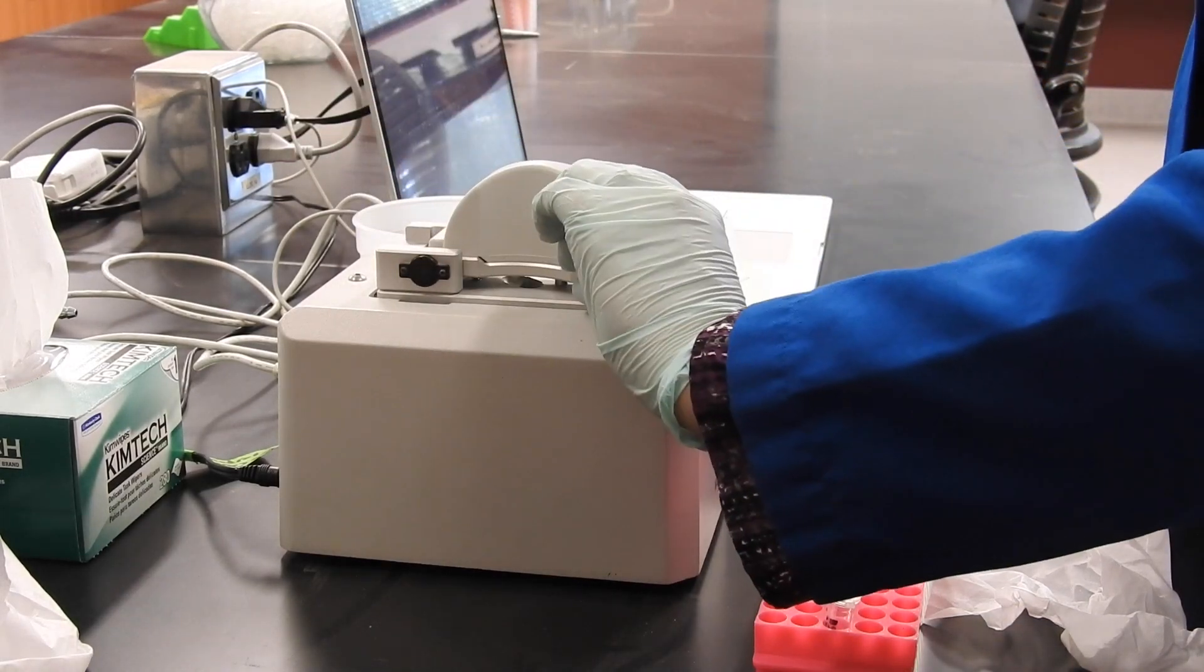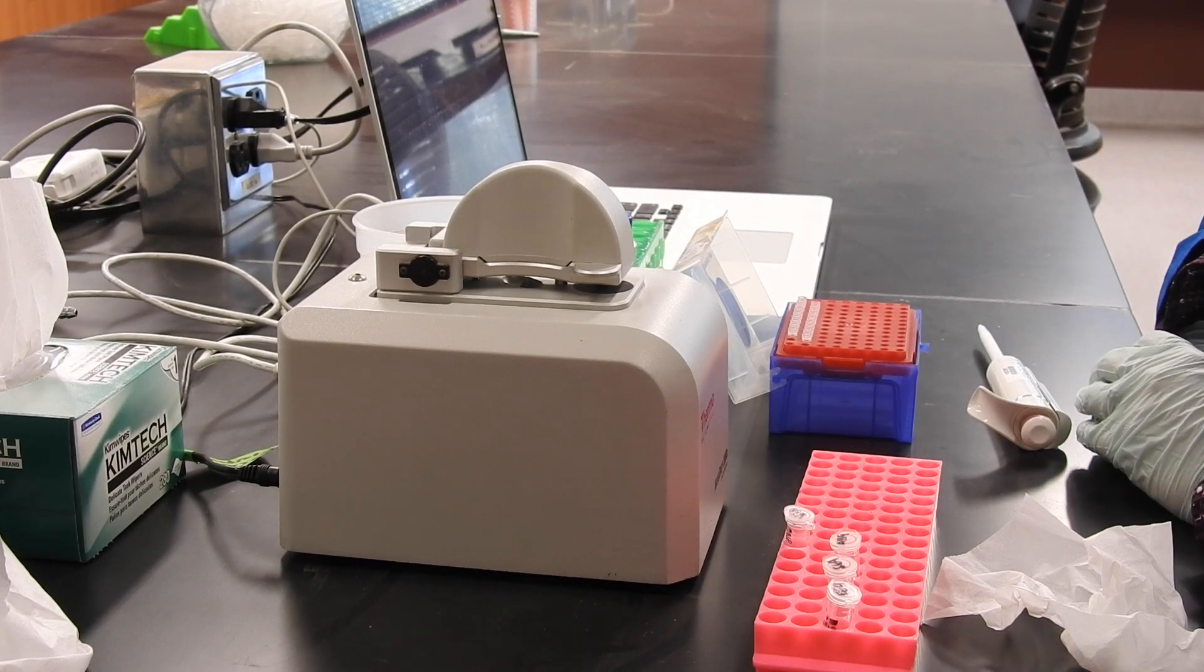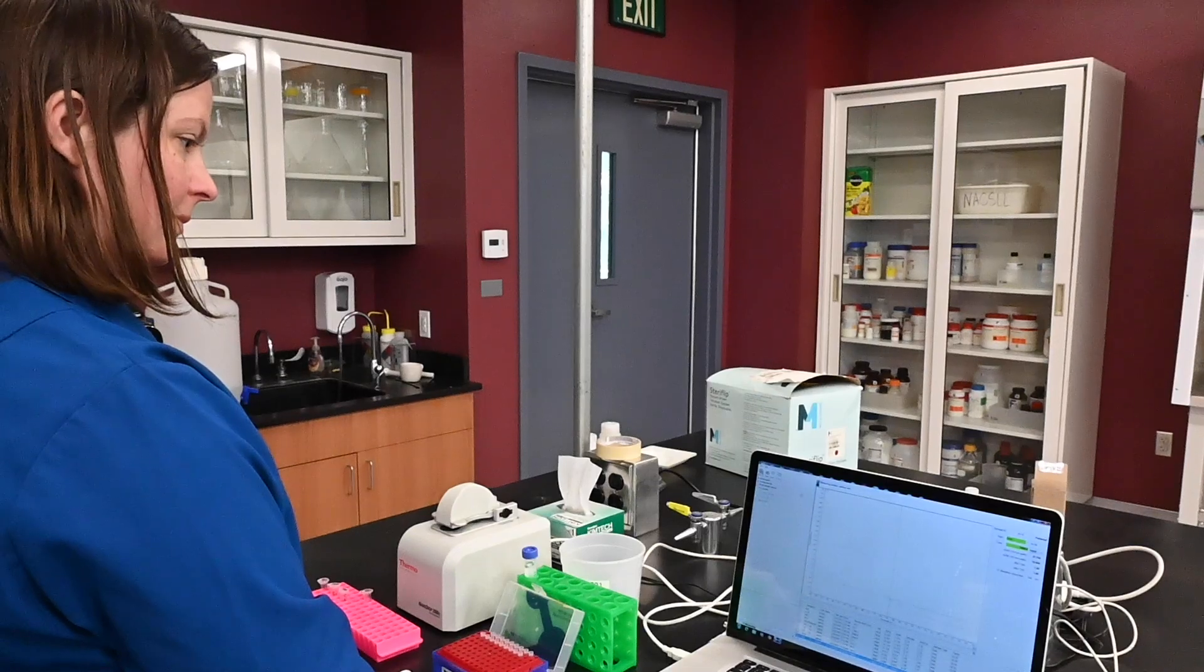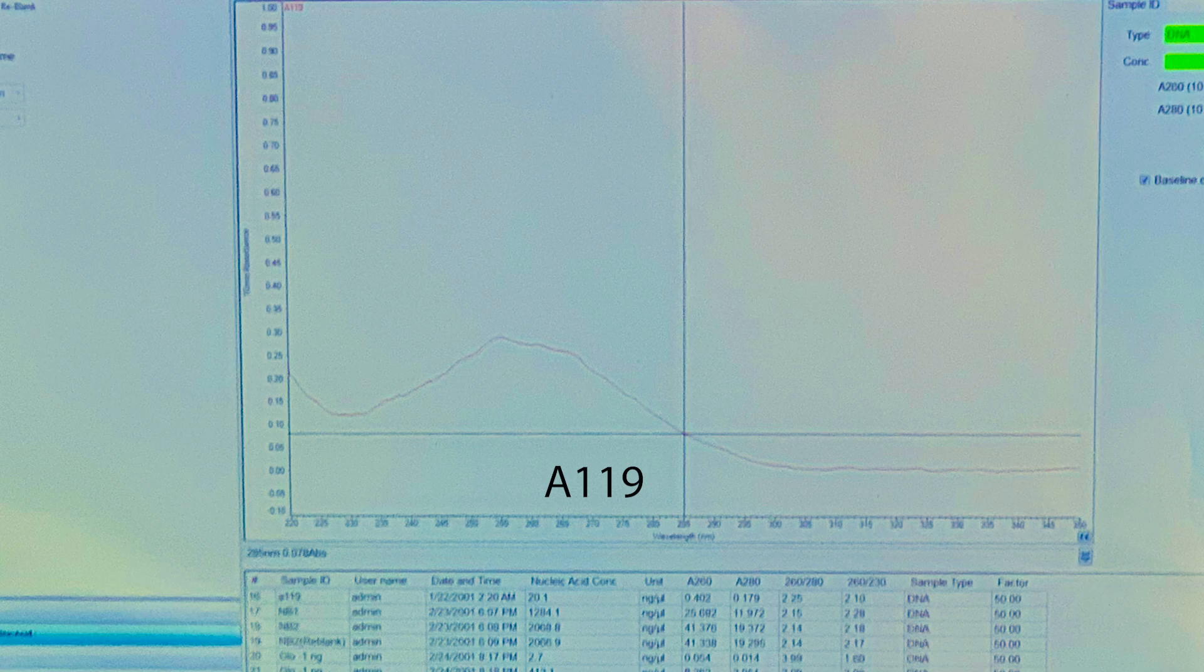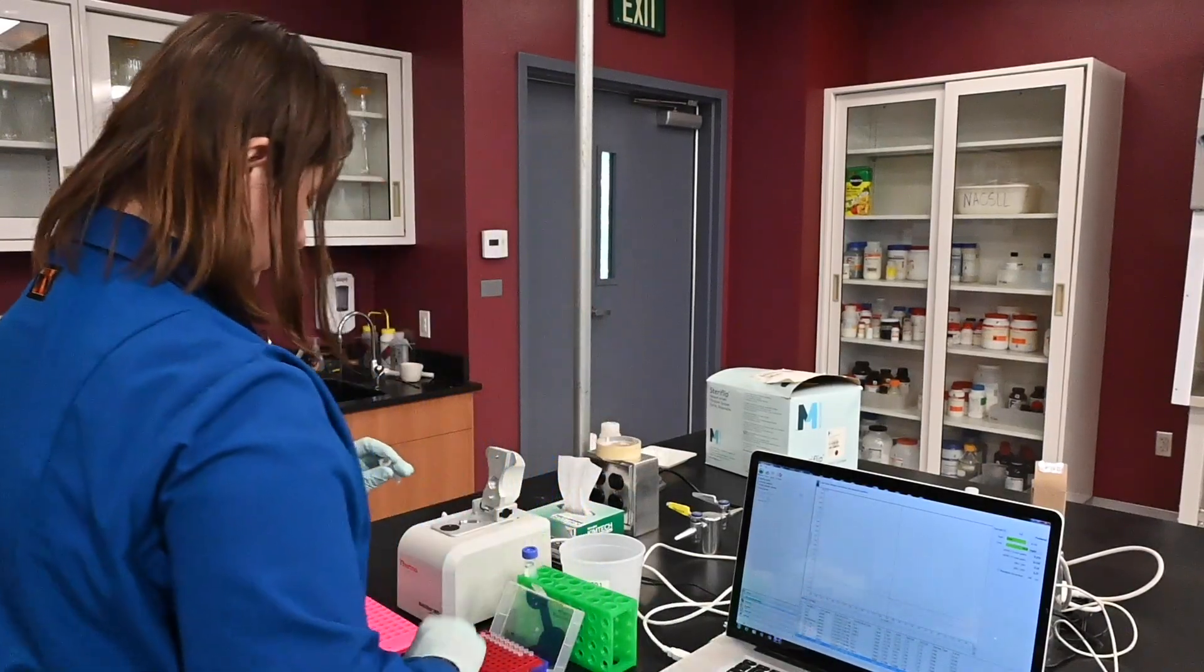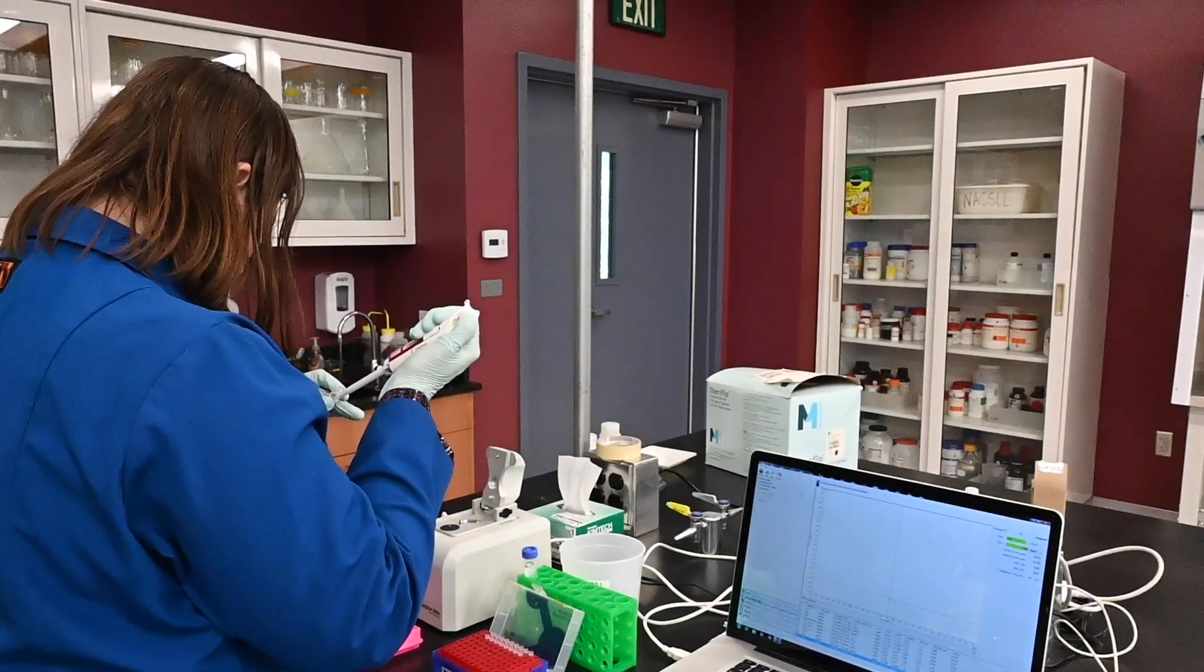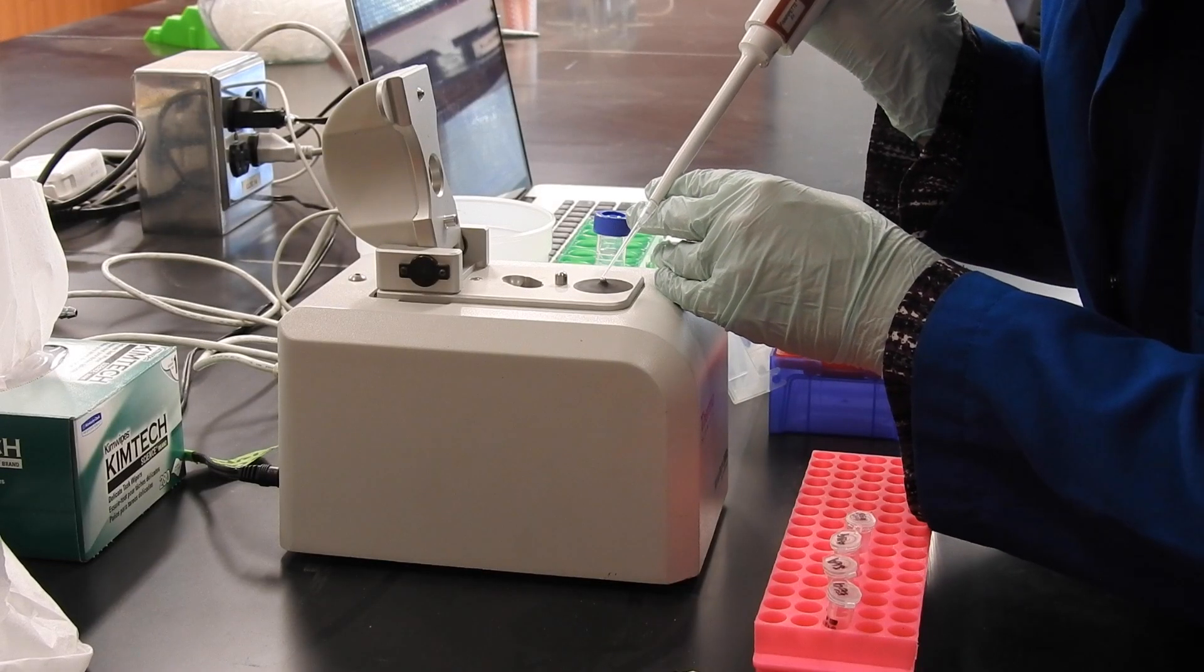And here I am with my third sample. Let's see how well I did on this one. Oh, that's a really short peak. Not a lot of DNA in this sample. Looks like the concentration is rather low. I'll show you at the end, there's a spreadsheet. But let's just let you know, shorter peak means that very little light is being absorbed. That means there's not a lot of nucleic acids in that particular sample.